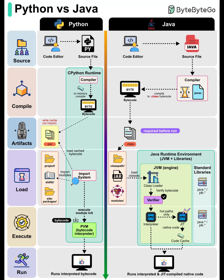Finally, both programs run, but with different tradeoffs. Python is fast for prototyping and has a simple pipeline, but it's always running interpreted bytecode. Java requires explicit compilation and a little more setup, but thanks to JIT, it can execute crucial sections of your code nearly as fast as C or C++ in many scenarios.